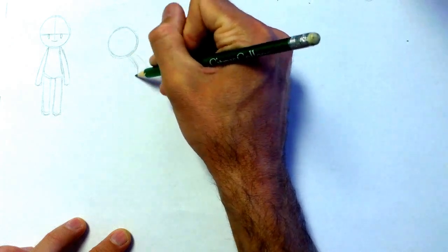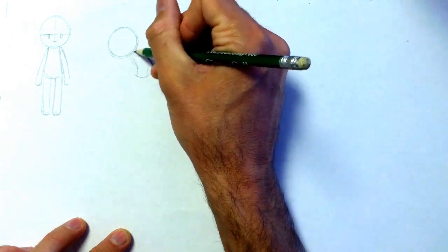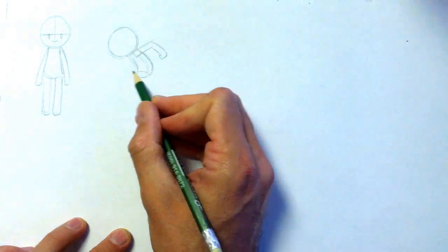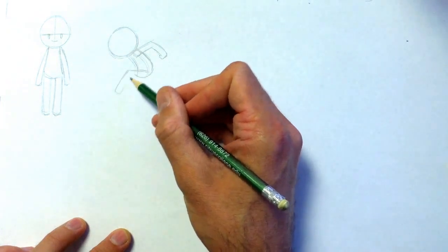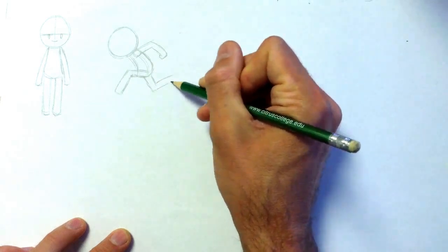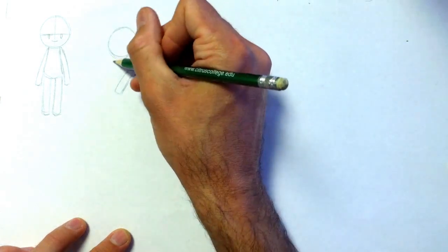And now the first pose we'll draw is a running pose. You notice I start with a gesture line that curves over, which is where I build the torso. And the arms and legs are opposite. So if the arm closest to us is back, the leg closest to us would be forward. And then I'm drawing the other leg and arm.